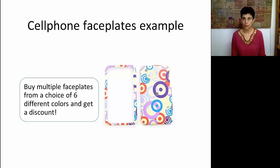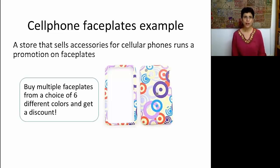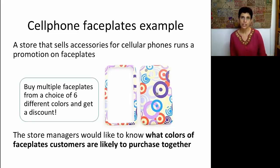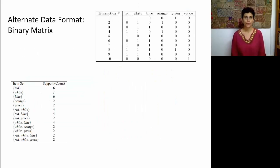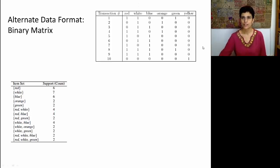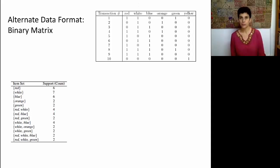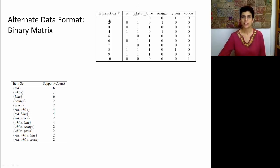Let's go back to our cell phone faceplate example introduced in the previous session. This involved a store that sells accessories for mobile phones, running a promotion on faceplates. They have six different colors and want to find which combinations of colors customers are likely to purchase together. We had 10 transactions for the first day, transformed into a data matrix with transactions in rows and colors in columns, using binary 0s and 1s to indicate whether a color was purchased in each transaction.